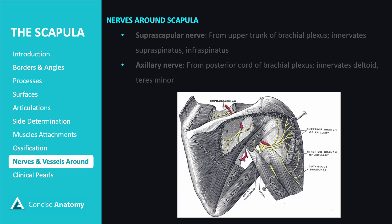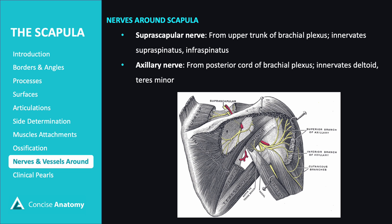Two nerves worth mentioning around the scapula are the suprascapular nerve and the axillary nerve. The suprascapular nerve originates from the upper trunk of the brachial plexus, descending laterally and passing through the suprascapular notch beneath the superior transverse scapular ligament, innervating the supraspinatus and infraspinatus muscles. The axillary nerve arises from the posterior cord of the brachial plexus and courses posteriorly.